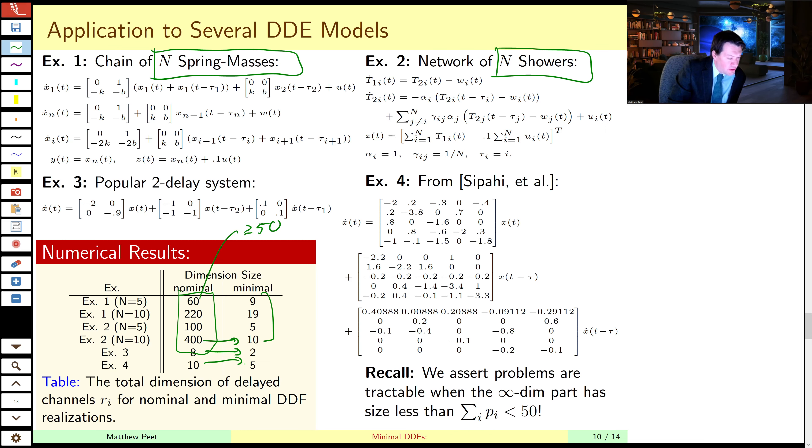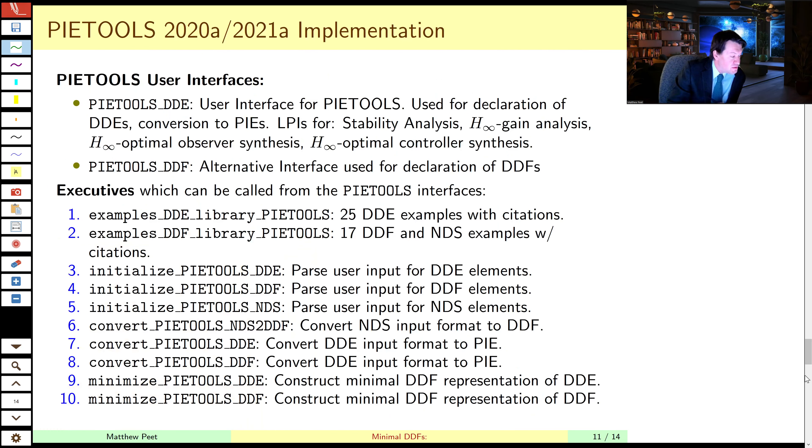So how can I use this SVD reduction technique? Well, this has been implemented within the PIETOOLS framework, not necessarily because I'm pushing for use of PIETOOLS, but because PIETOOLS has an existing interface for defining DDEs and DDFs. In particular, the interfaces, DDE and DDF allow for input of user defined DDEs and DDFs. If you don't want to input your own, you can use the libraries which exist. These are initialization techniques. These are conversion formulas. So here we're converting naively from NDS to DDF, DDE to DDF, and DDF to PIETOOLS.